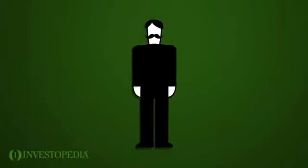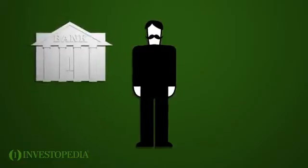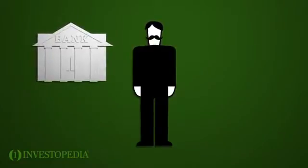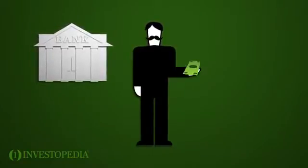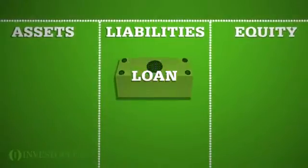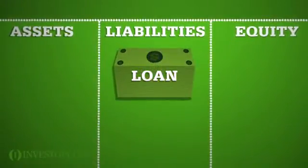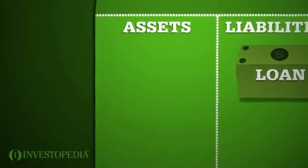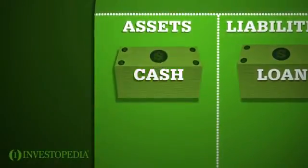Meet Joe. Joe goes to the bank and gets a small business loan. The bank gives him cash. On the balance sheet, his liabilities increase by the size of the loan and his assets increase by the same amount.